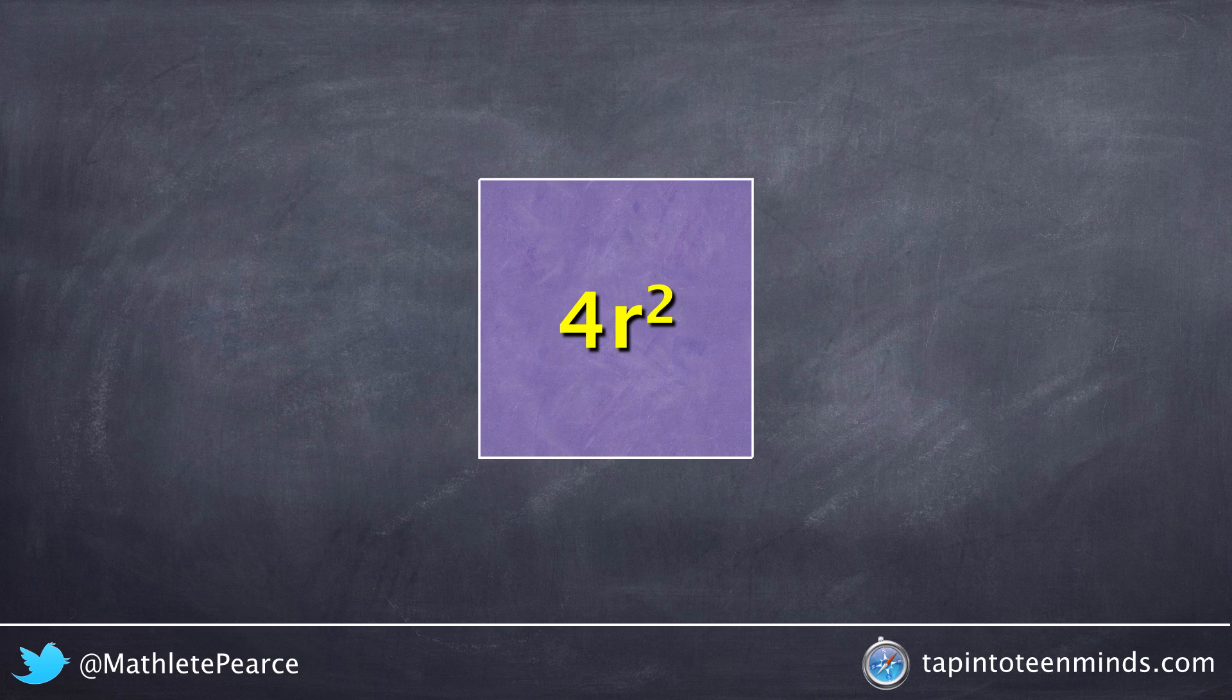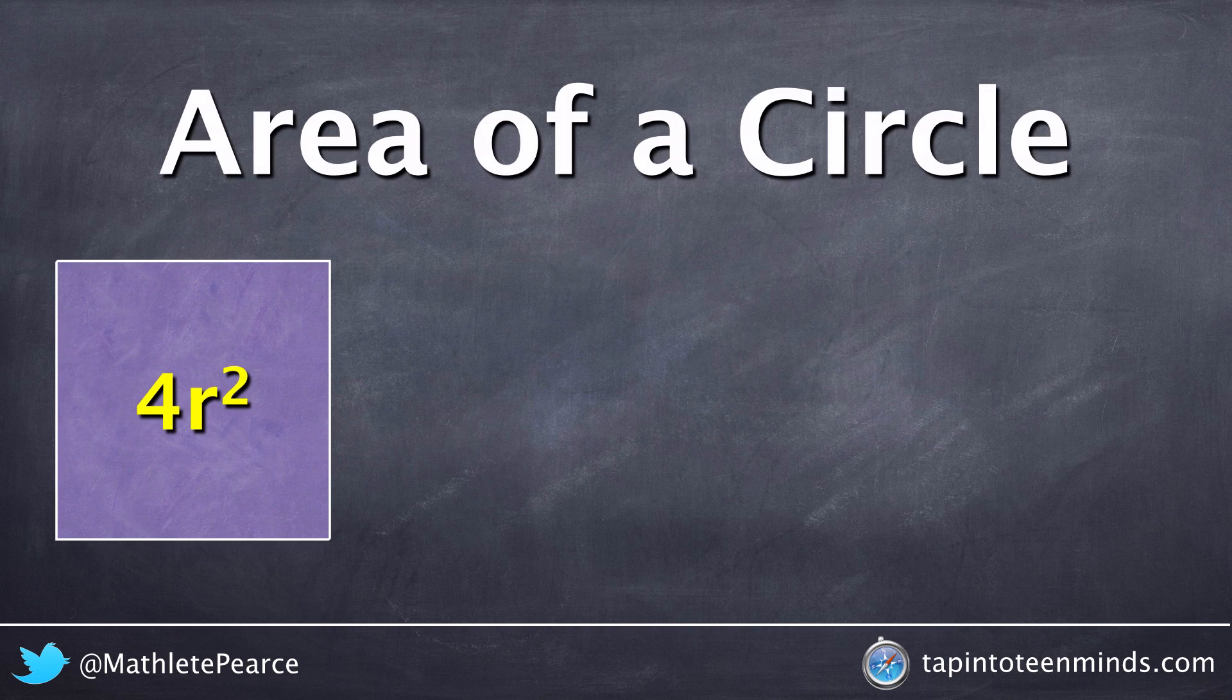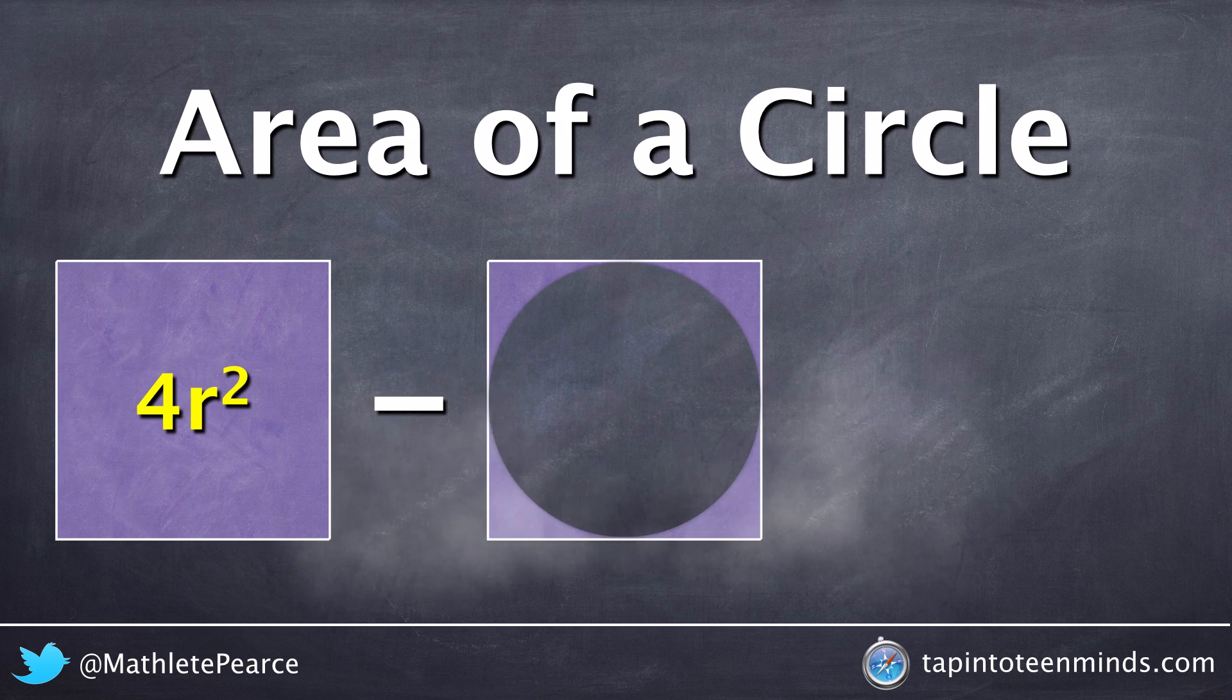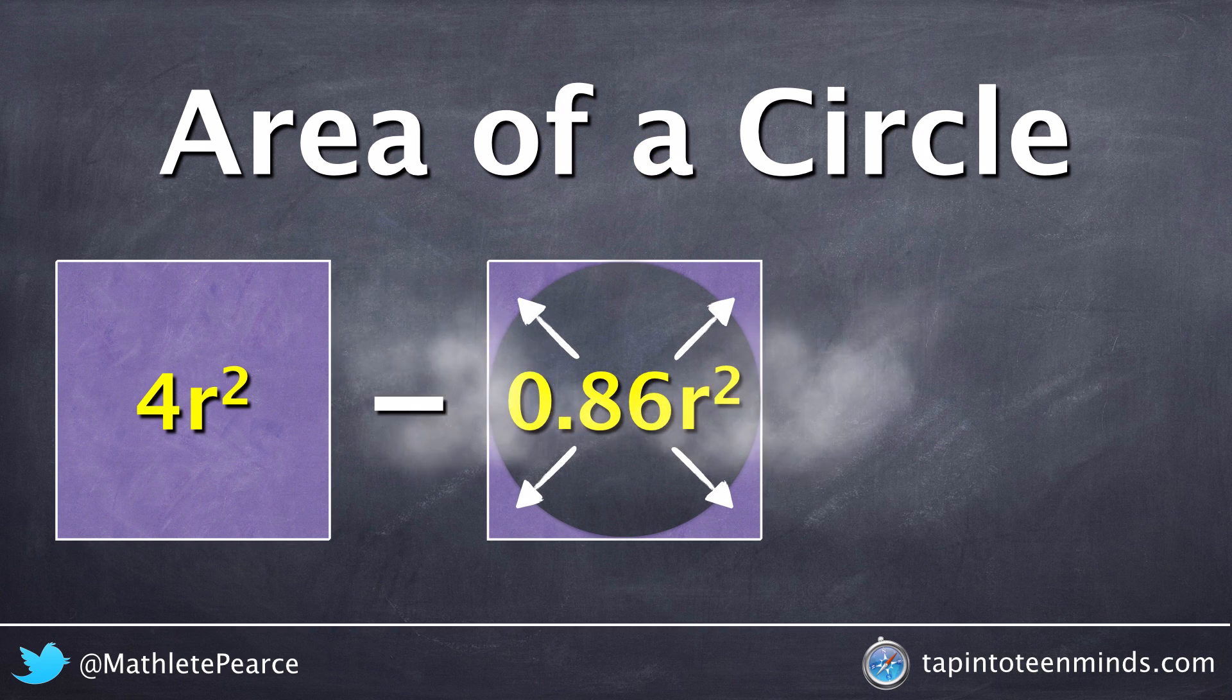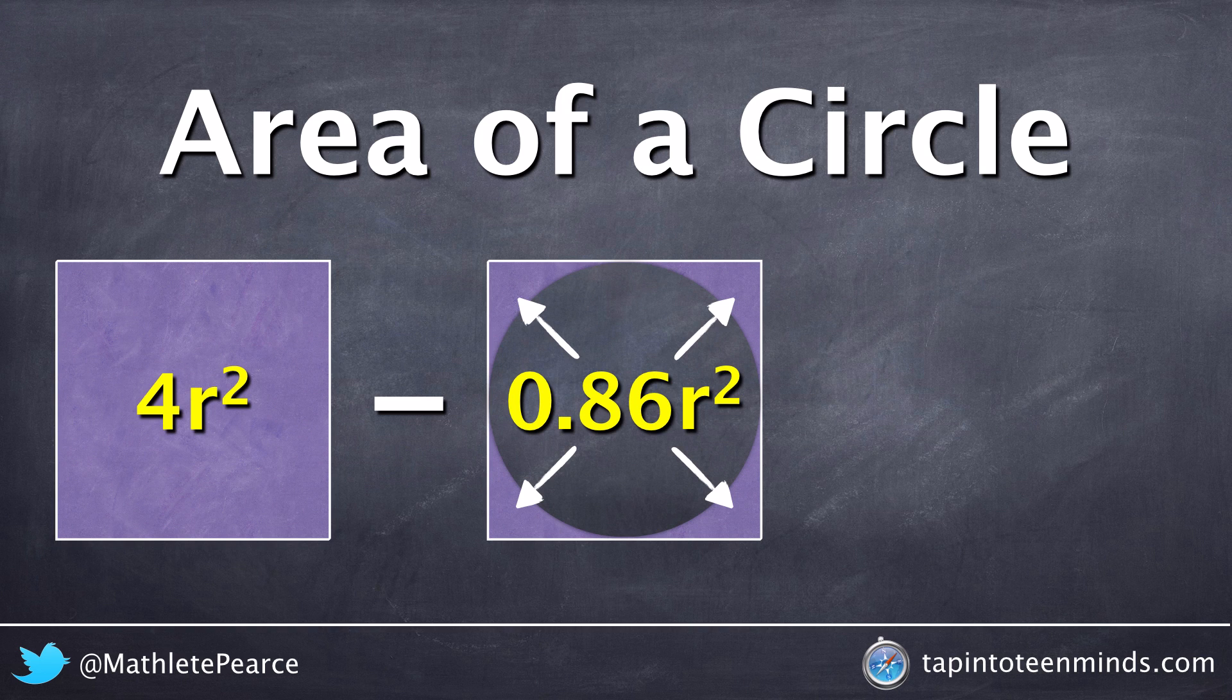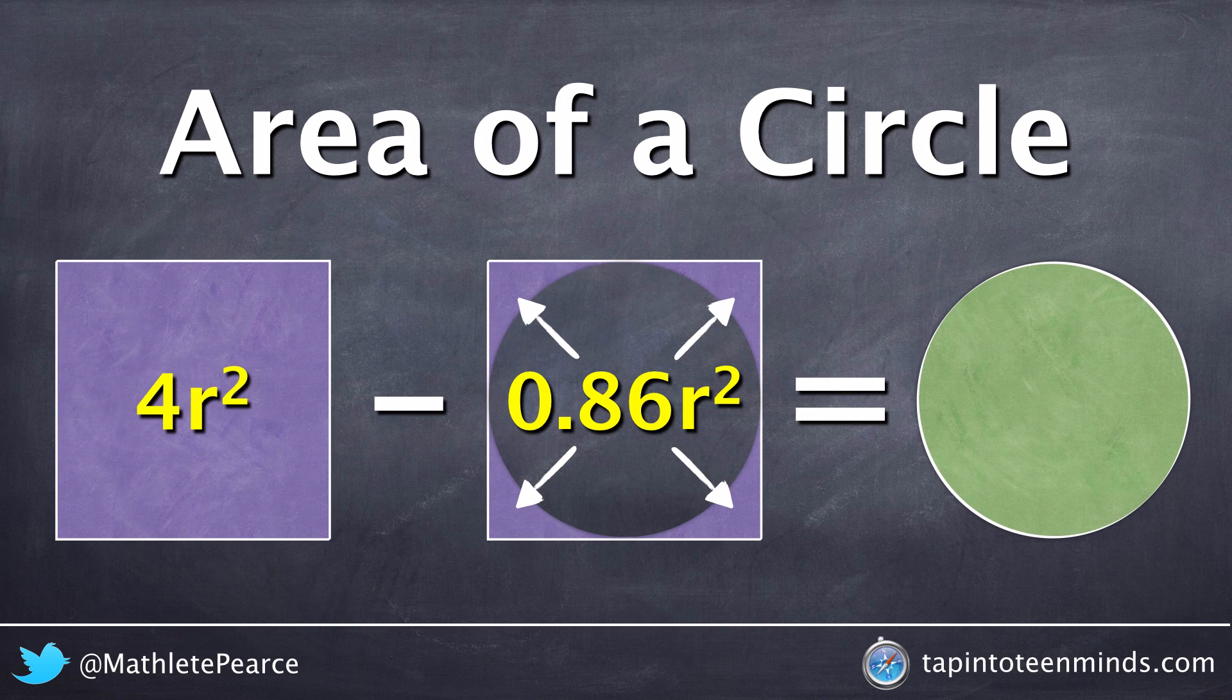So let's break this down a little bit. By taking that 4r squared and visualizing the corners that we need to eliminate, those corners have an area of 0.86r squared. And if I subtract those two values,